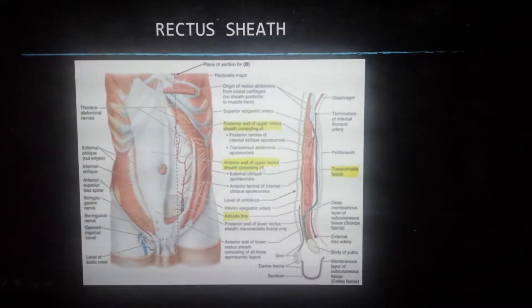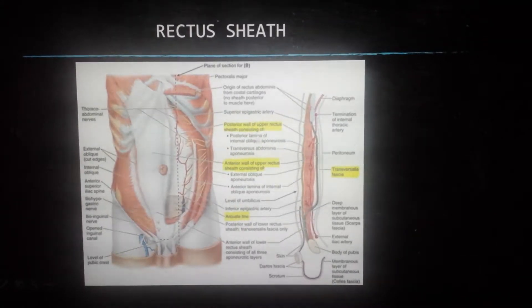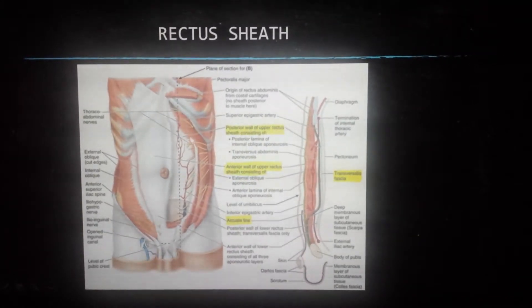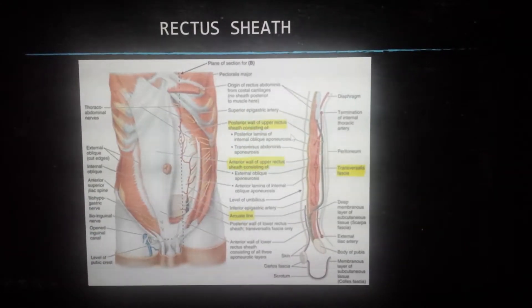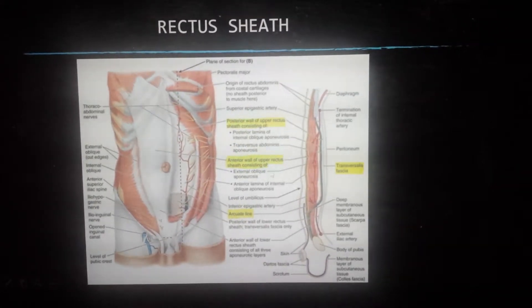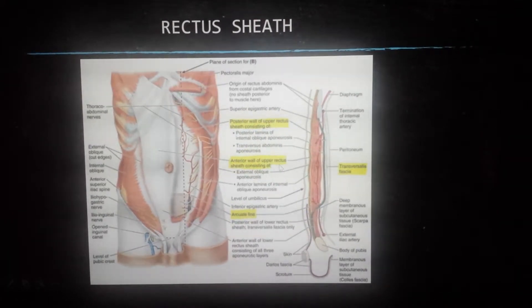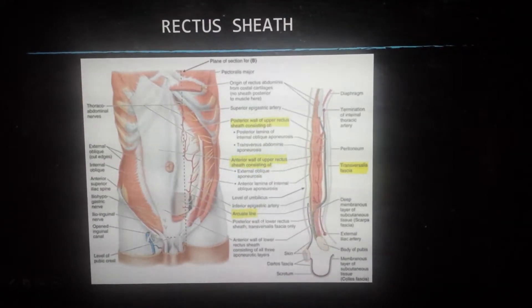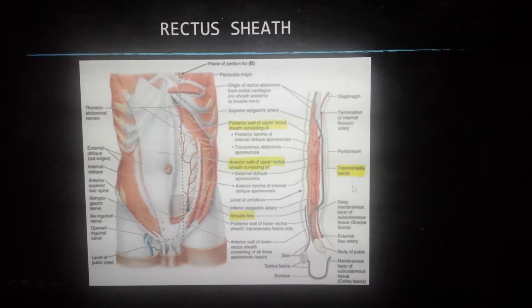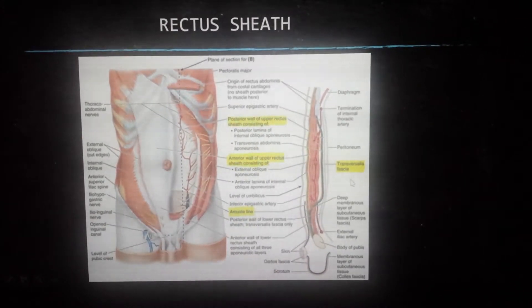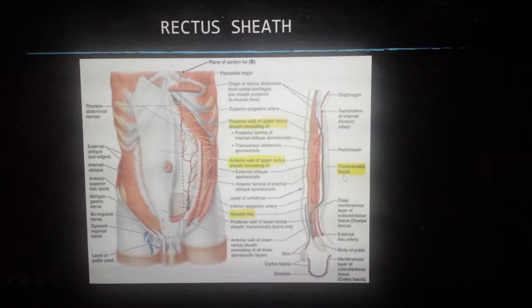Here you can see the different layers of the rectus sheath — the posterior wall of the upper rectus sheath and the anterior wall of the upper rectus sheath, with the arcuate line over here and the transversalis fascia over here.